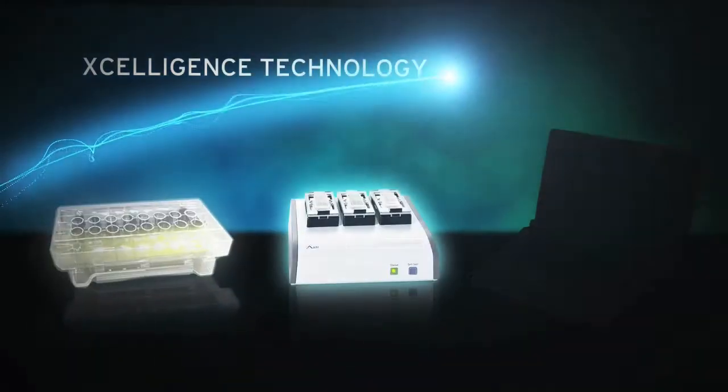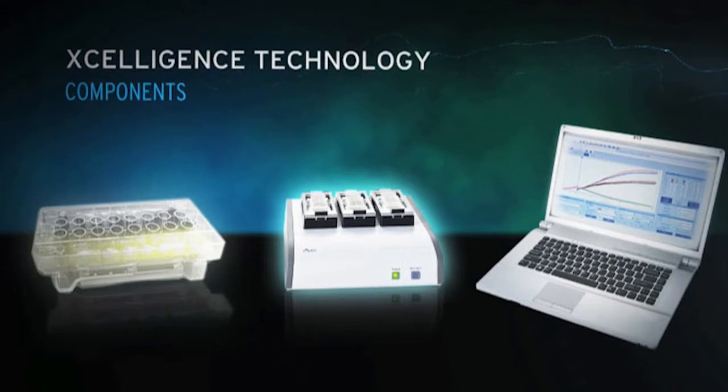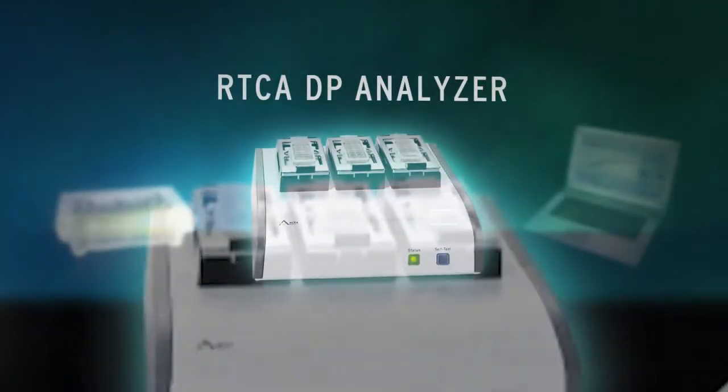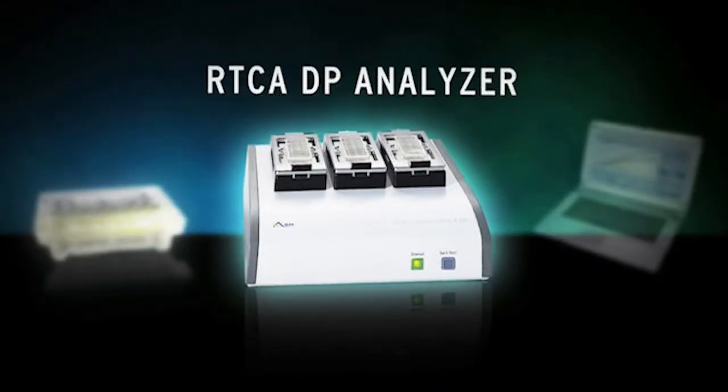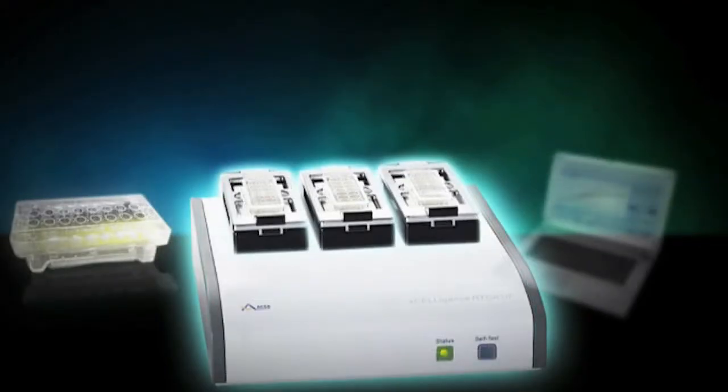Let's look more closely at all the components of the Acceligence system. Sized to fit inside a standard tissue culture incubator, the RTCA DP analyzer provides stations for three 16-well E-plates. Stations are fully integrated, but can also work independently.